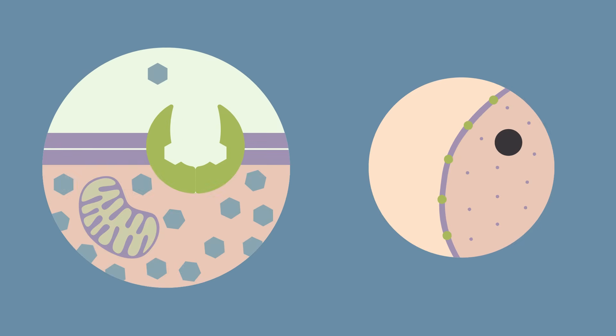Active transport is carried out by protein carriers within the cell membrane, and they have a specific binding site for the exact molecules they are transporting. The substance binds to the protein carrier on the low concentration side, and using energy from respiration, the protein carrier releases the substance on the other side of the cell membrane, where it is already at a high concentration.